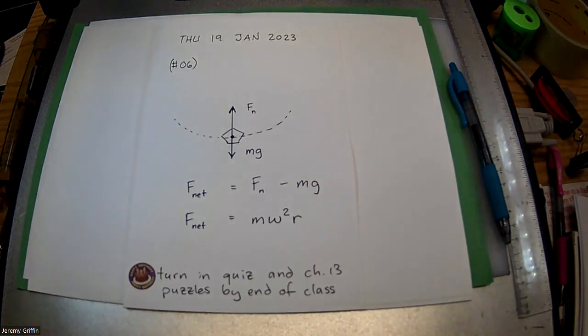So the net force is apparent weight minus actual weight, but net force is also this expression here. So that should help you out. All the other ones I think are pretty in line with everything we've done last couple weeks. Turn that in with your puzzles by the end of class.